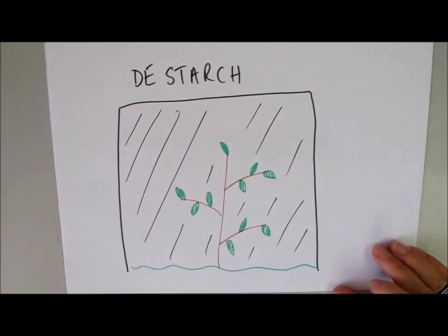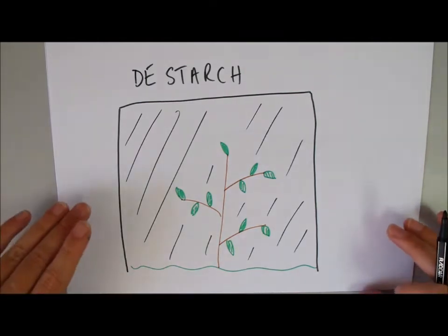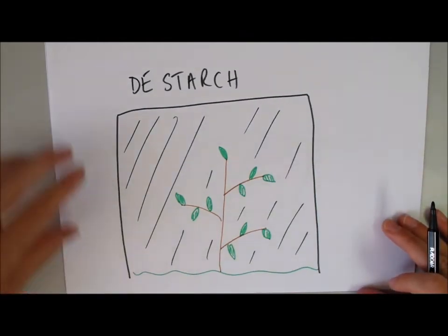So, then when we test our leaves for starch after our experiment, if they have starch in them, we know it's as a result of what we have done, not just because the plant was photosynthesising before we started the experiment.